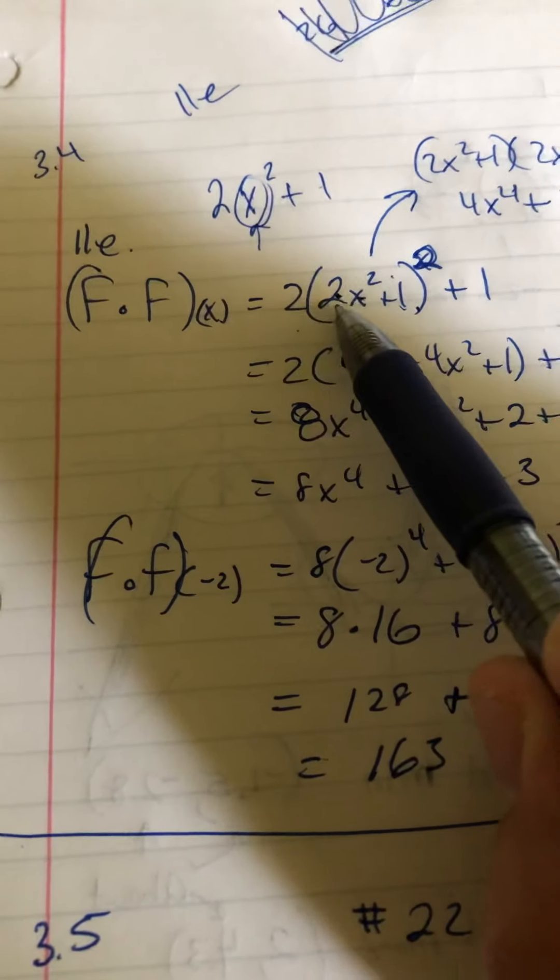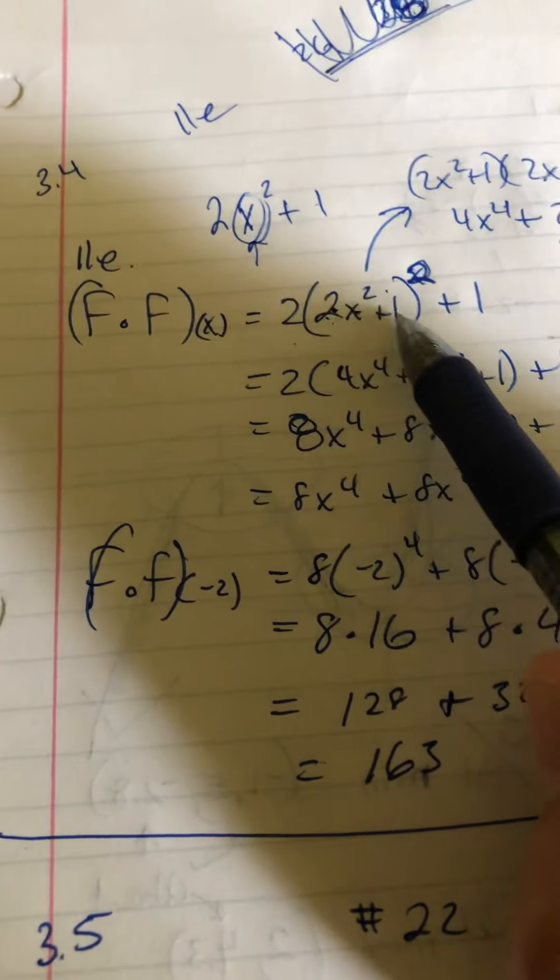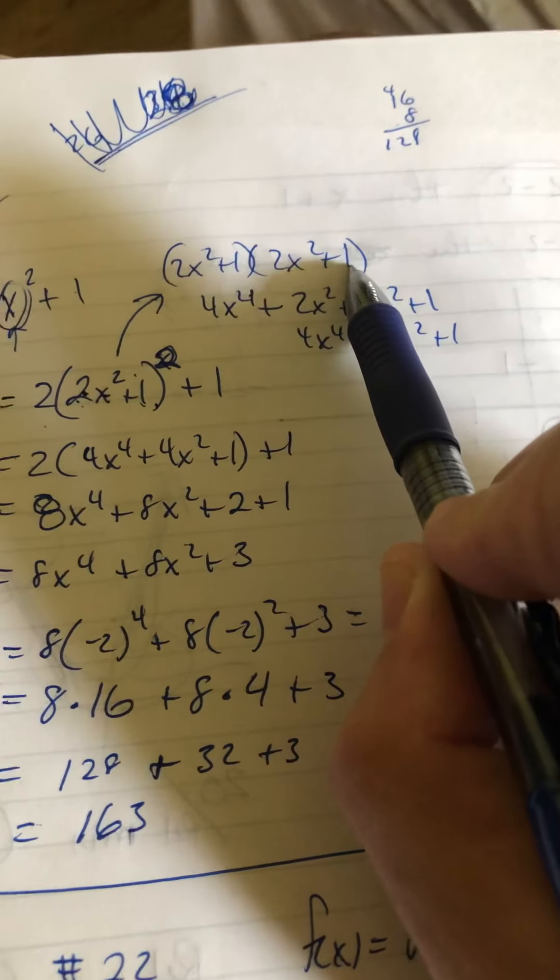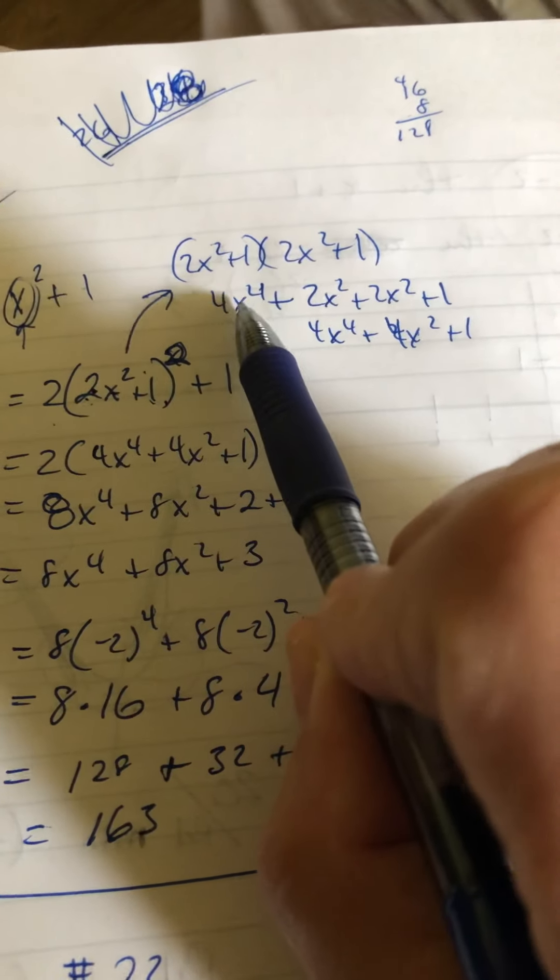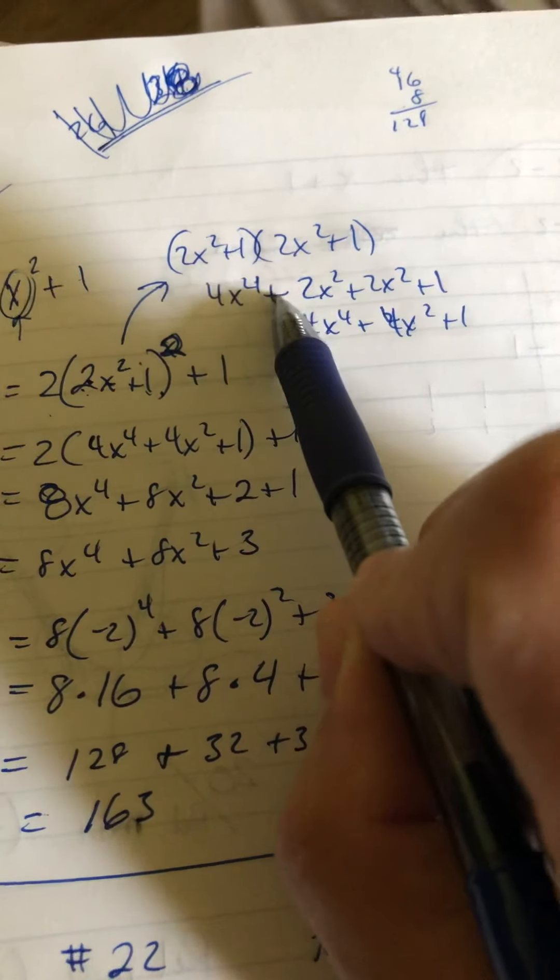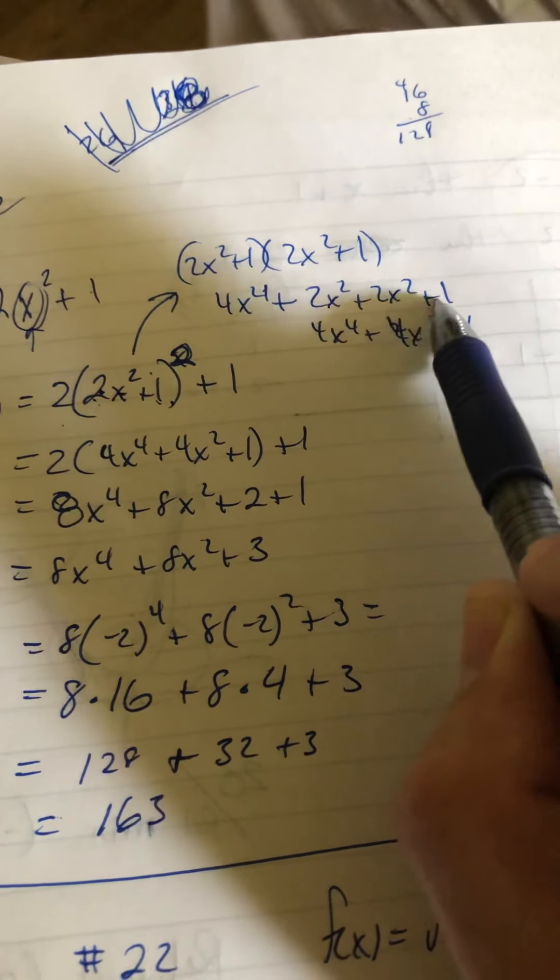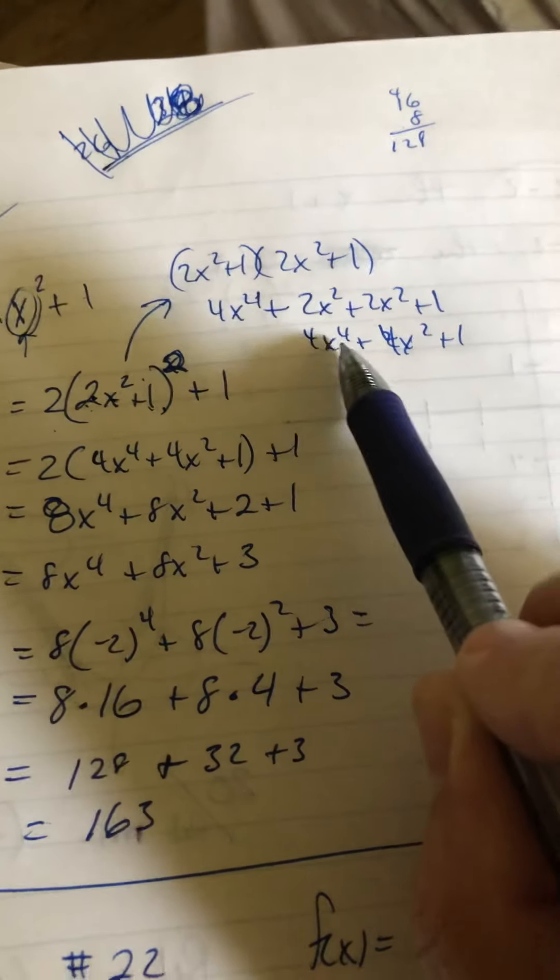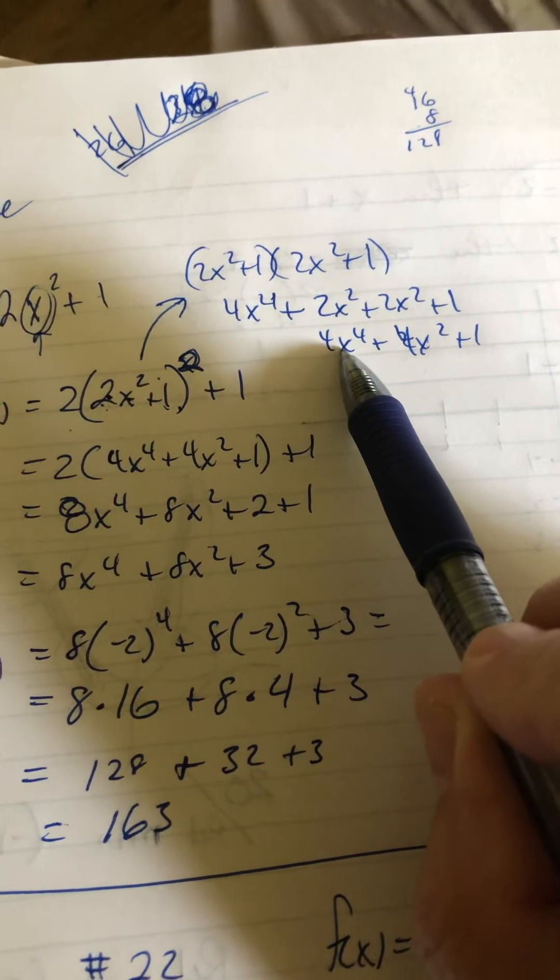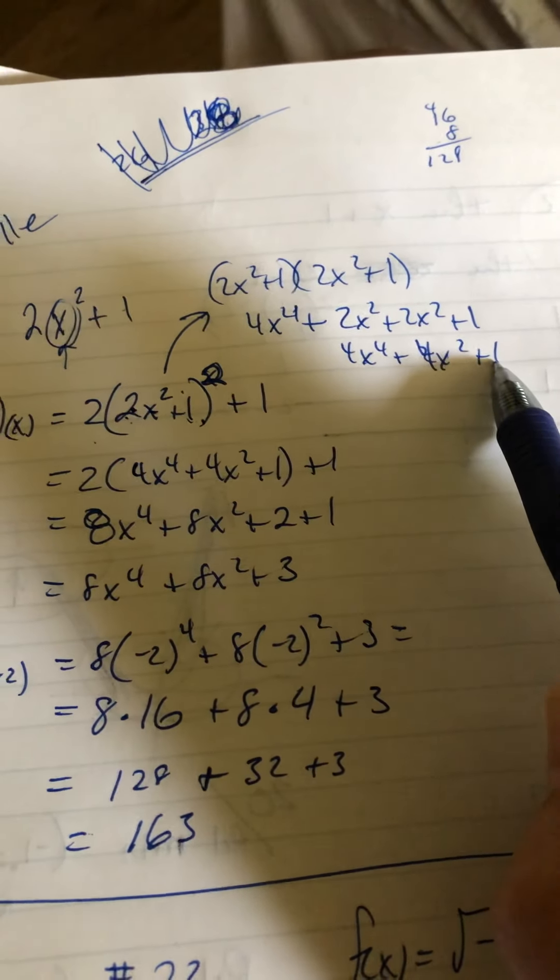You have 2x squared plus 1, that quantity is squared, and what that will look like is 2x squared plus 1 times 2x squared plus 1. If you FOIL that out, or multiply it out, you have 4x to the 4th plus 2x squared plus 2x squared plus 1. Then you combine like terms and end up with 4x to the 4th plus 4x squared plus 1.